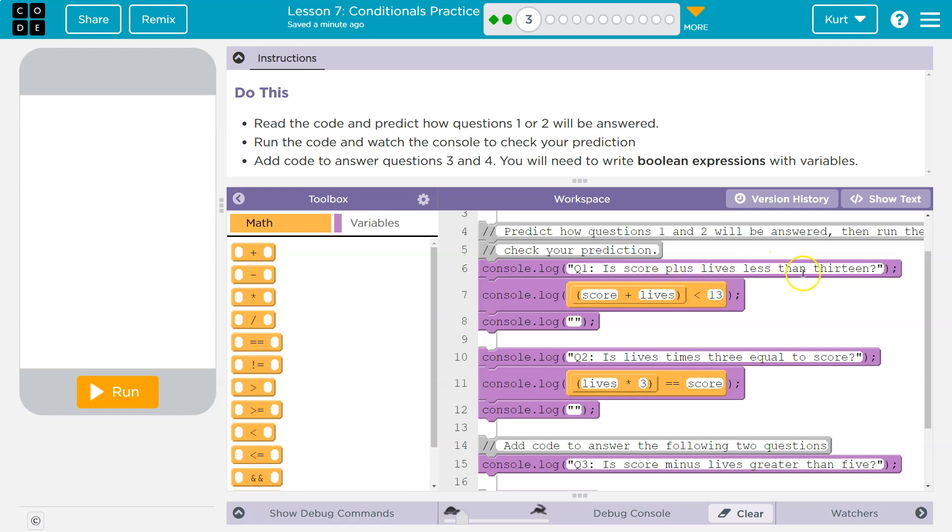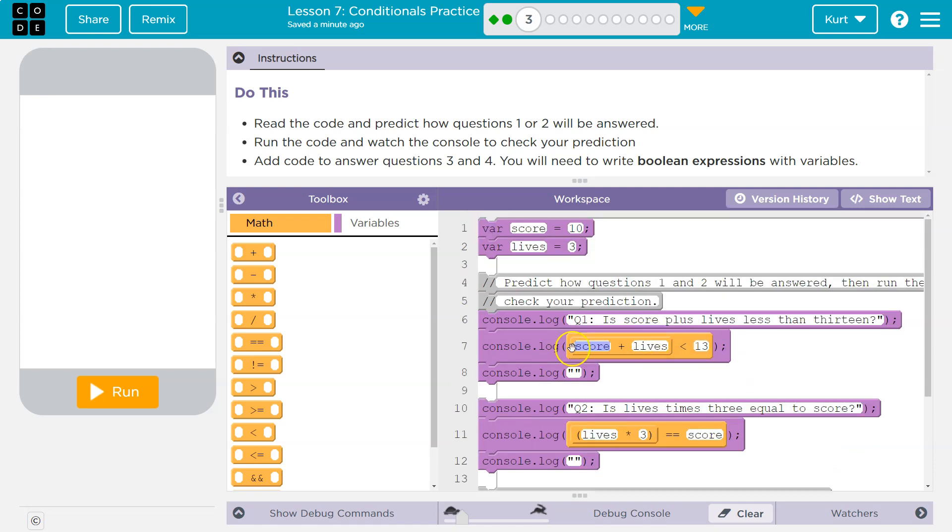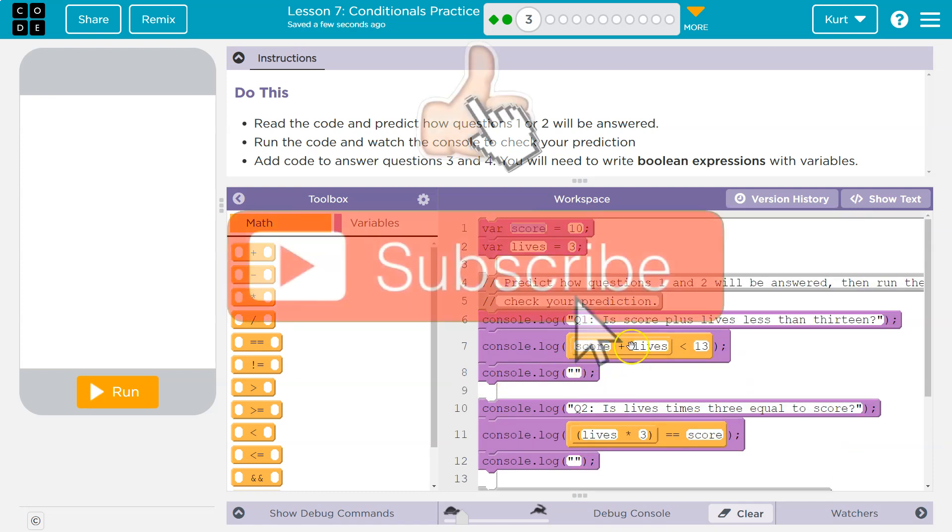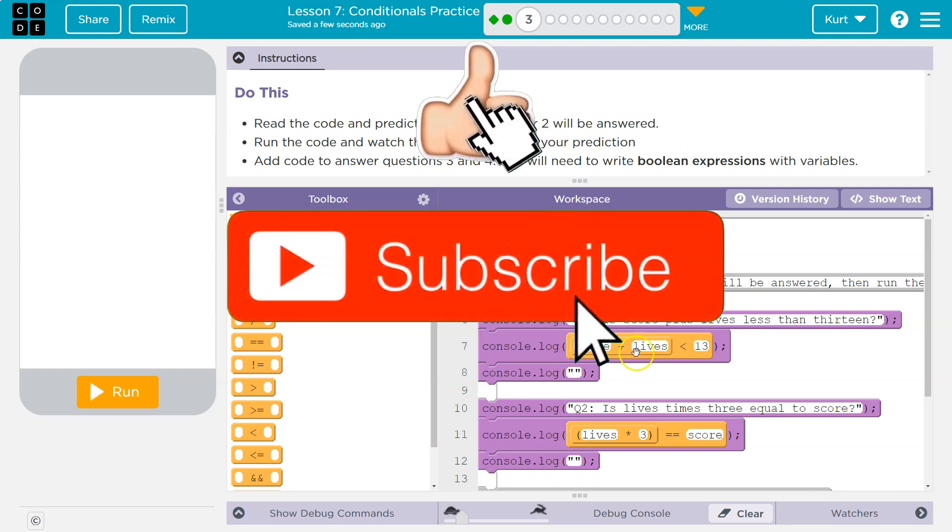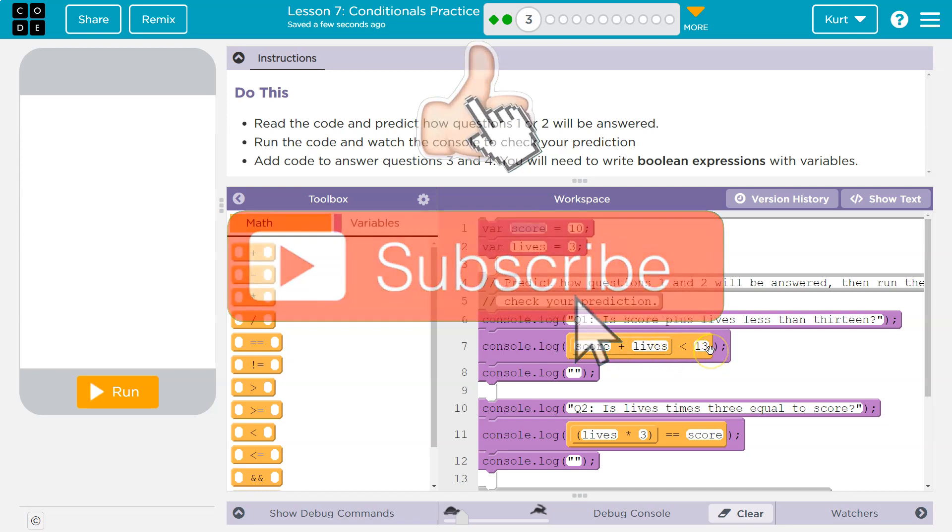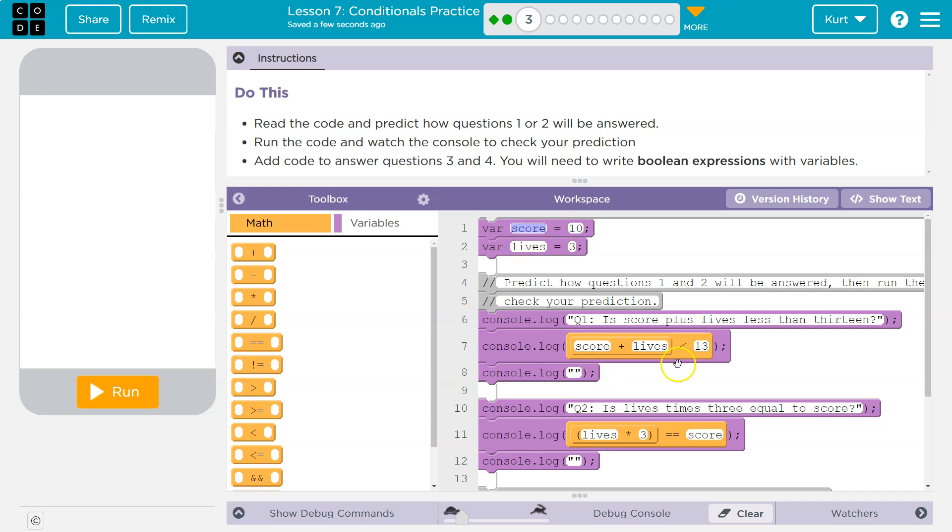Questions one and two. Question one: Is score plus lives less than 13? Okay, well, where is score defined? Oh, score is right here. So, is score 10 plus lives 3? Is 10 plus 3 less than 13? No, right? Score is 10, lives is 3. Well, 10 plus 3 is not less than 13, so that will be false.